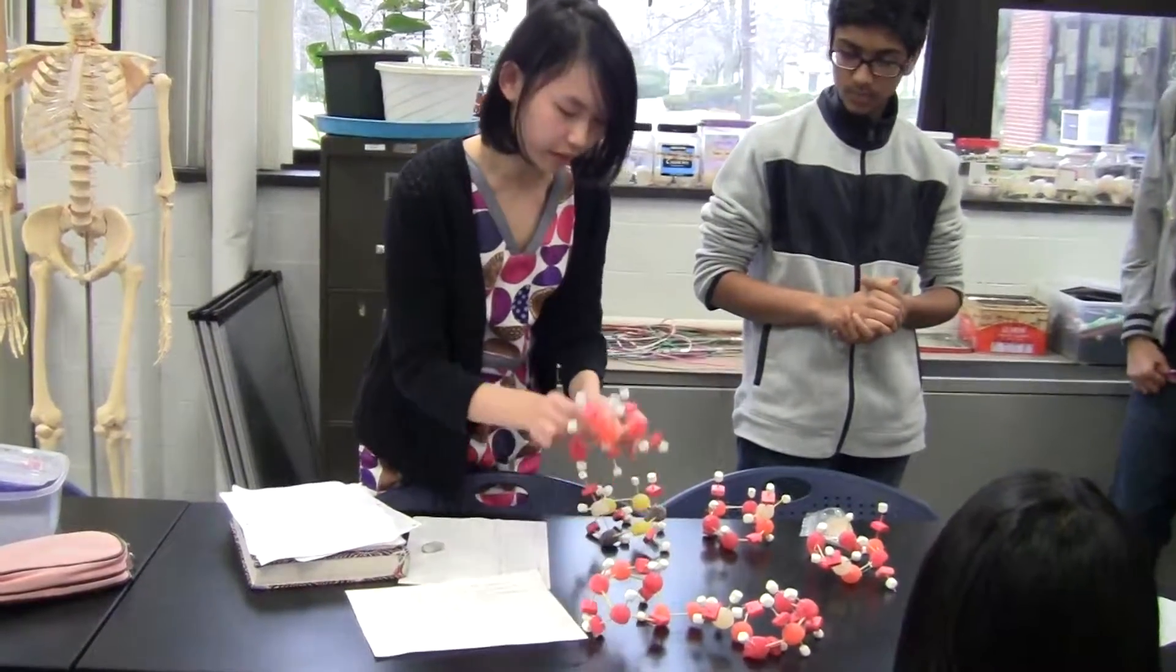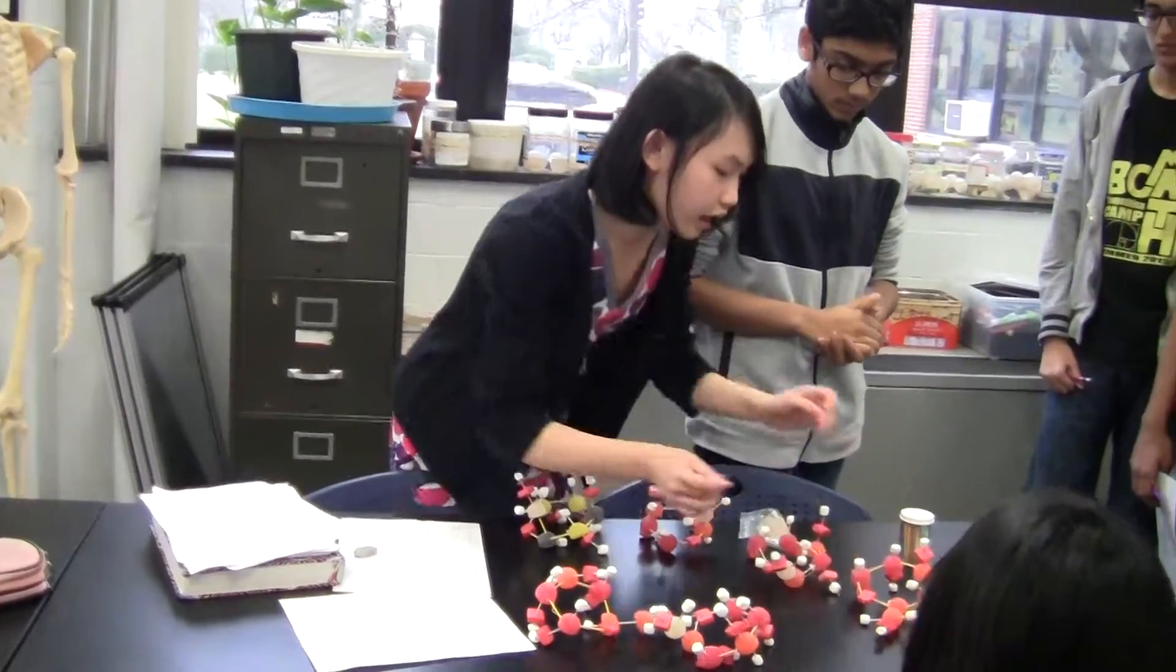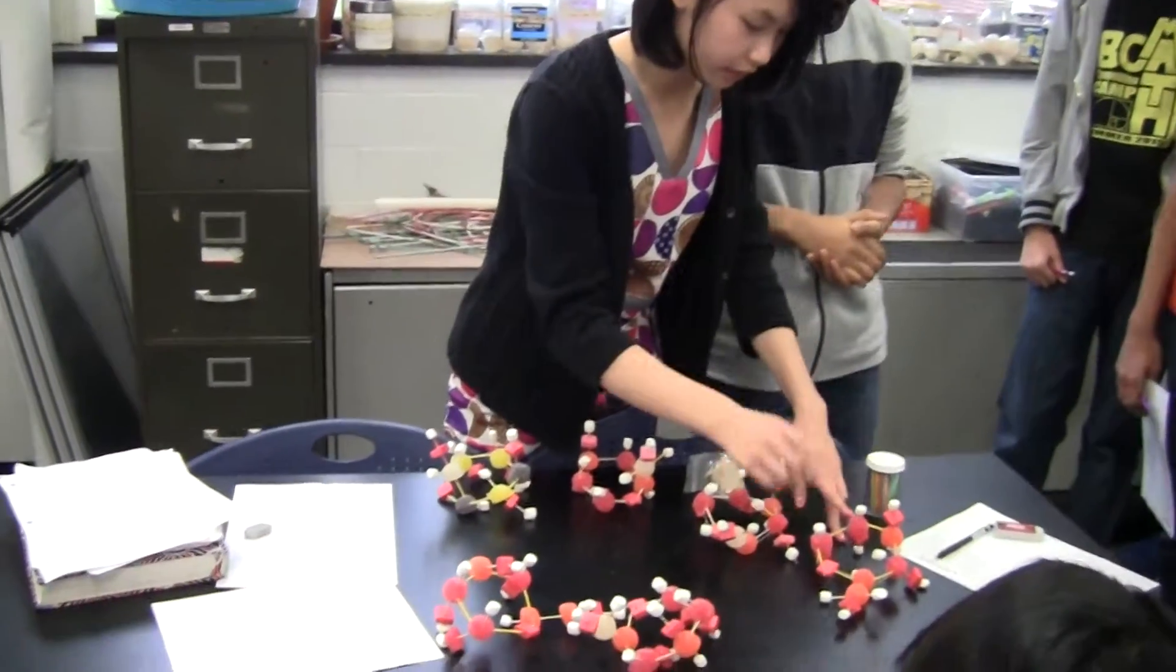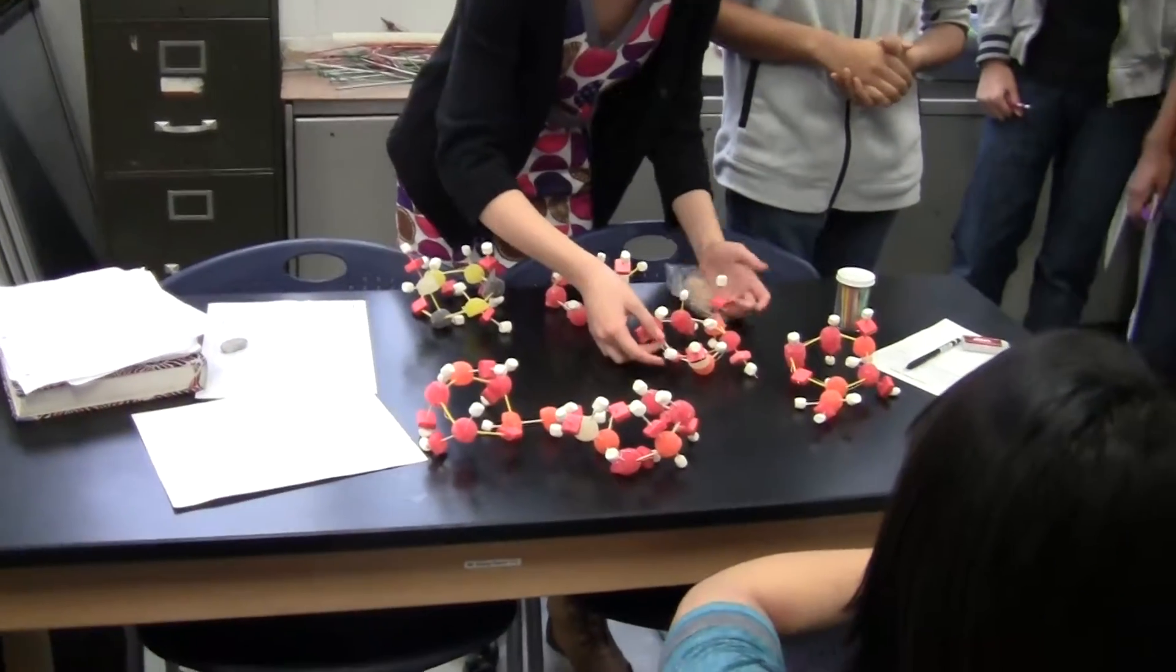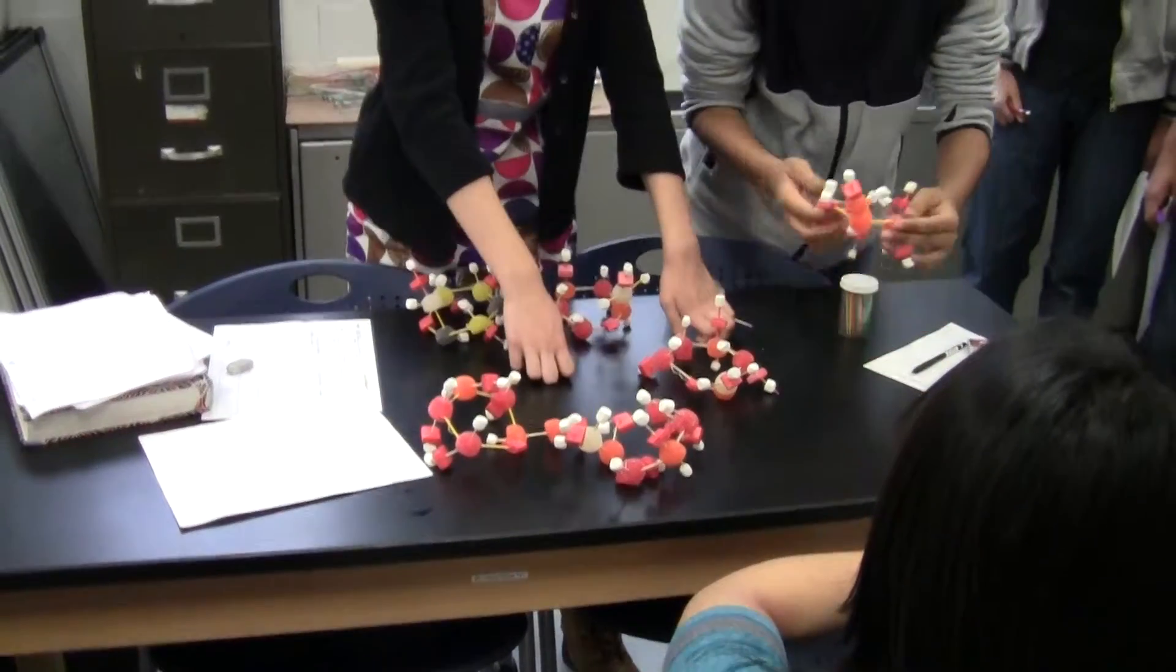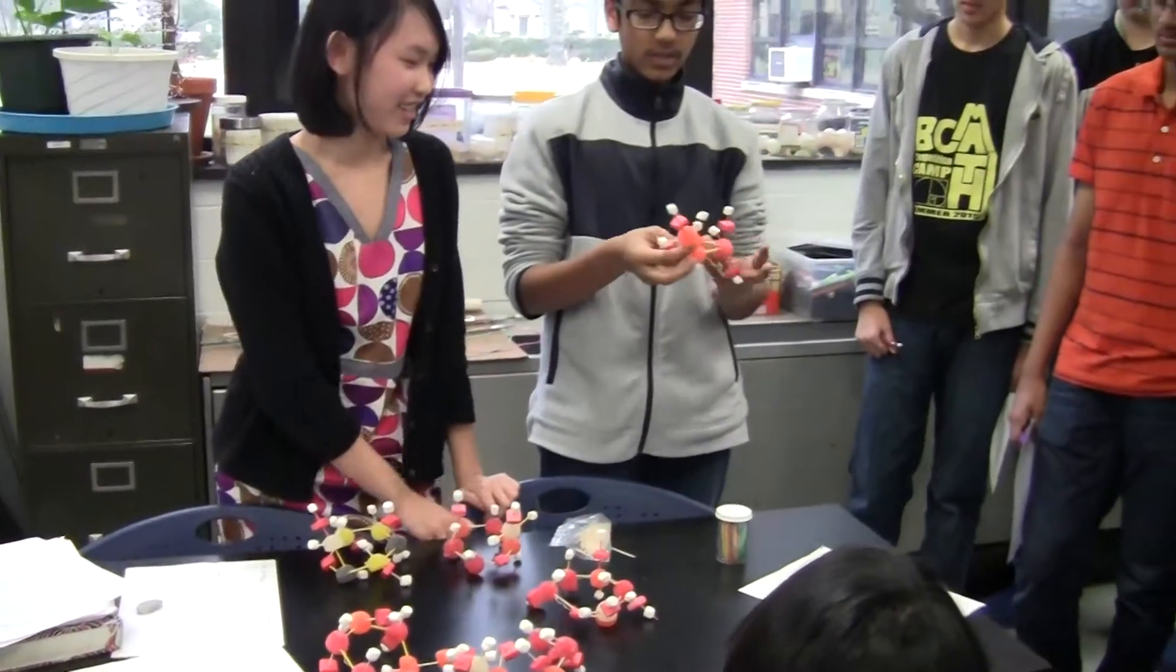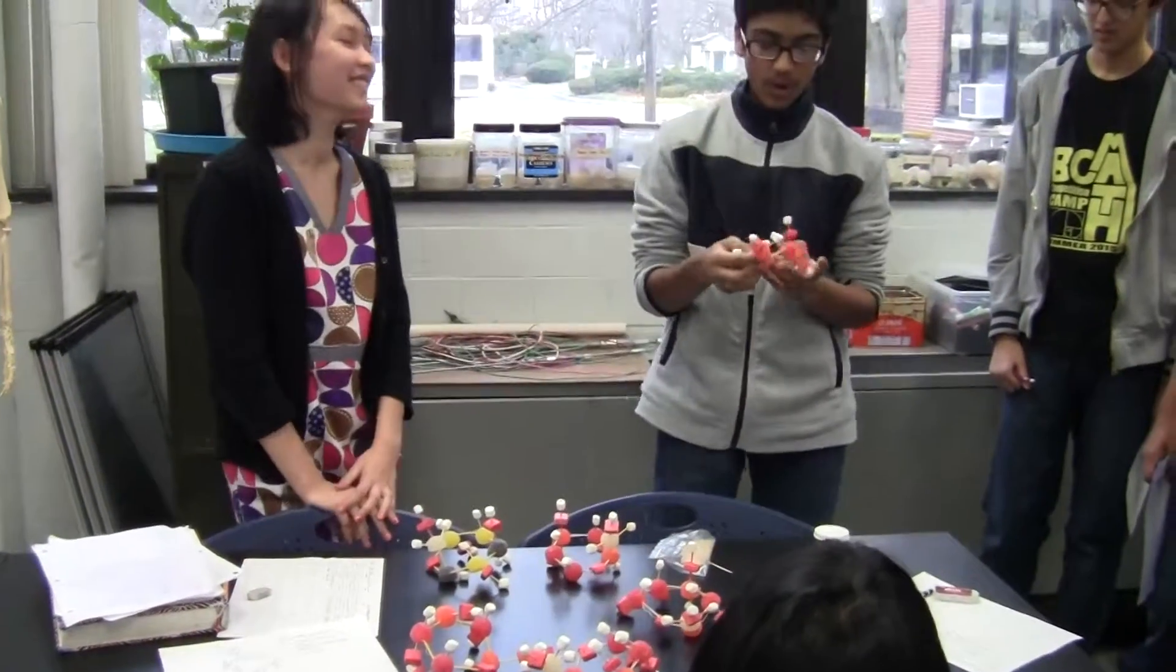So here we have a monomer, it's a monosaccharide of glucose, and you can see the down, down, up, down structure of it, and we're going to bond it with this other glucose. Before we go into the bonding, I'd just like to talk a little bit about our model.